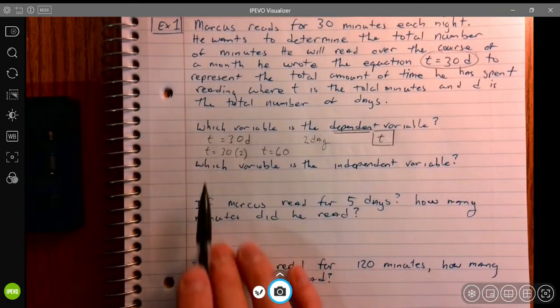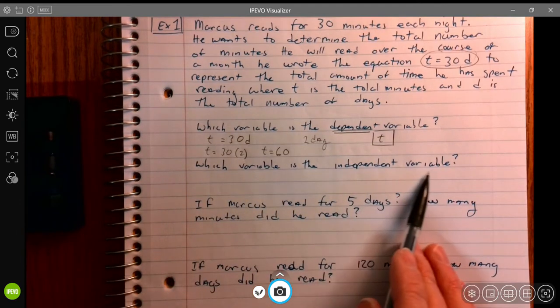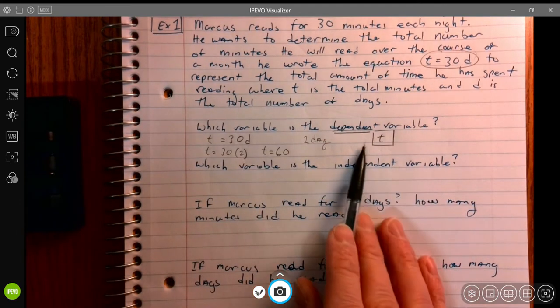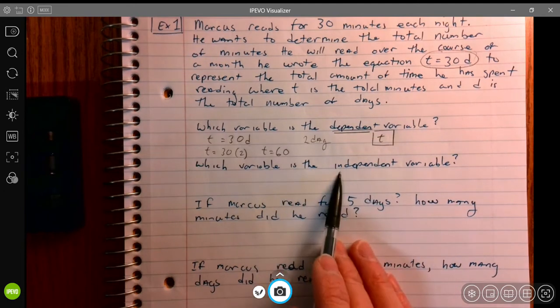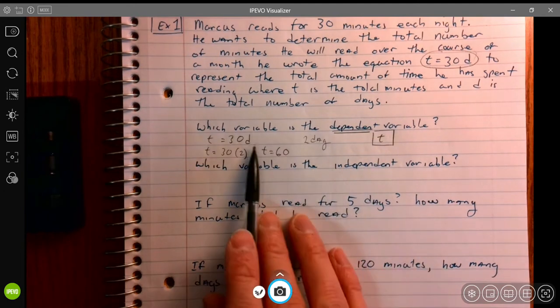Well, this one says which variable is the independent variable. If t is dependent, guess which one's going to be independent? d.